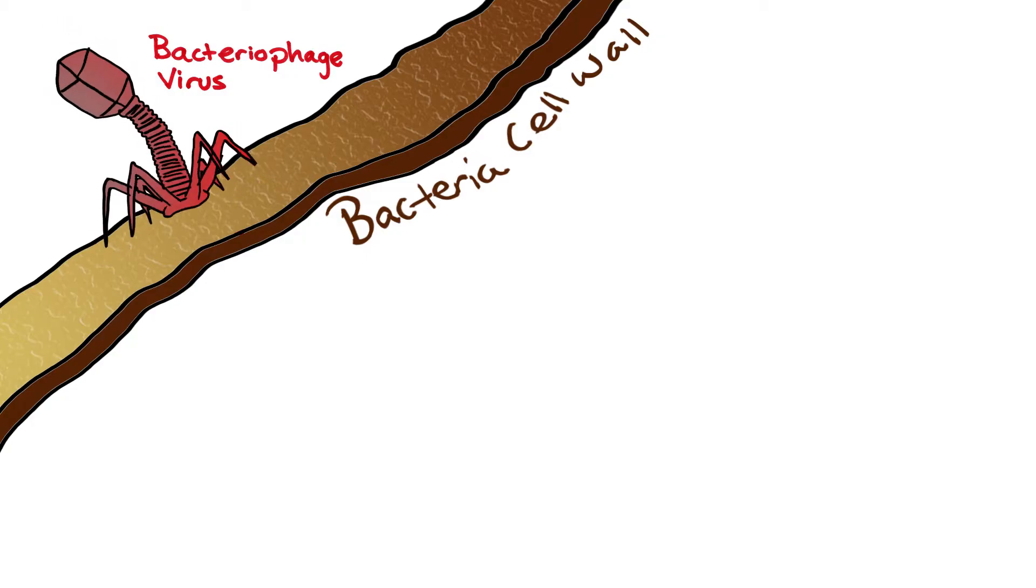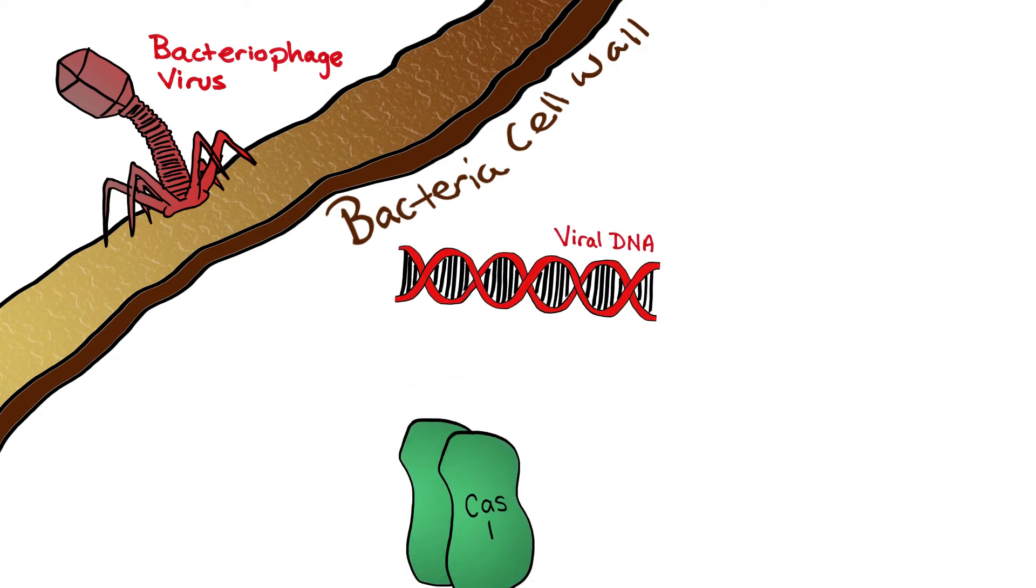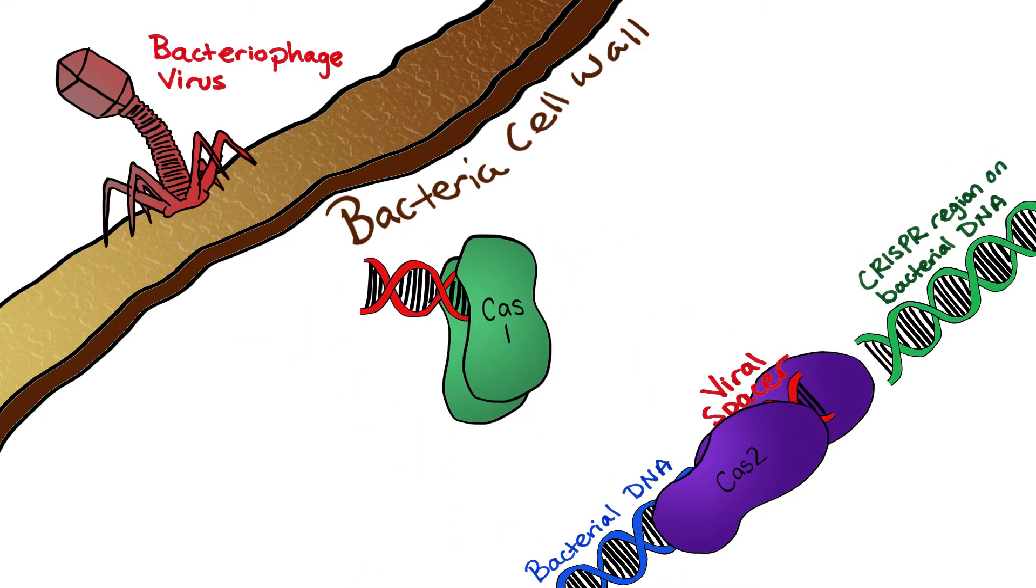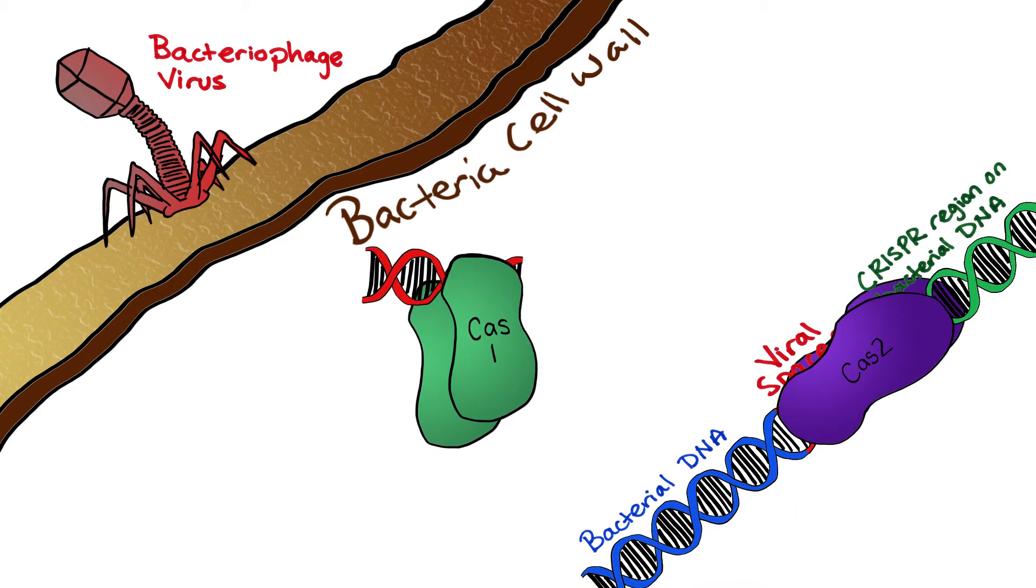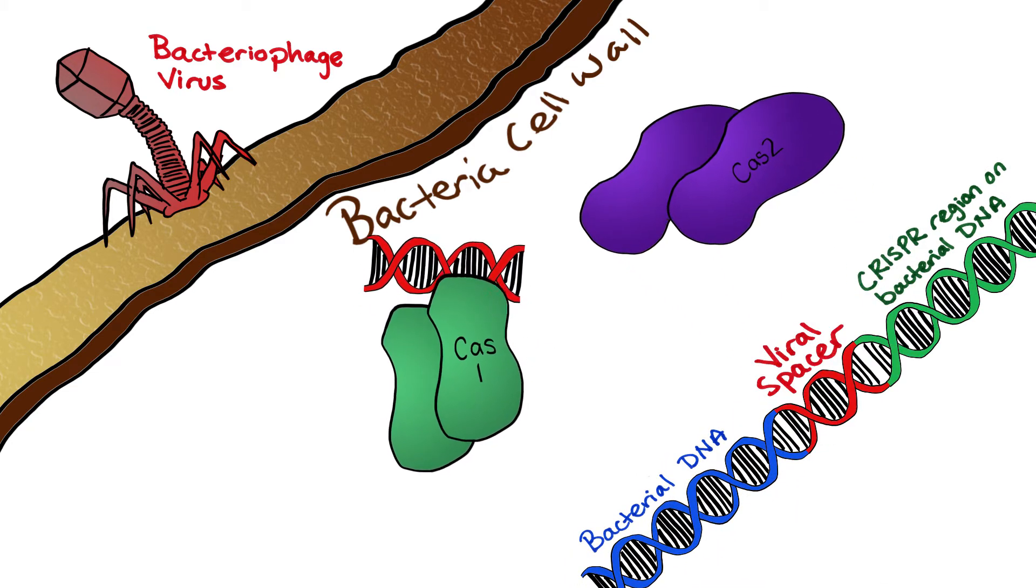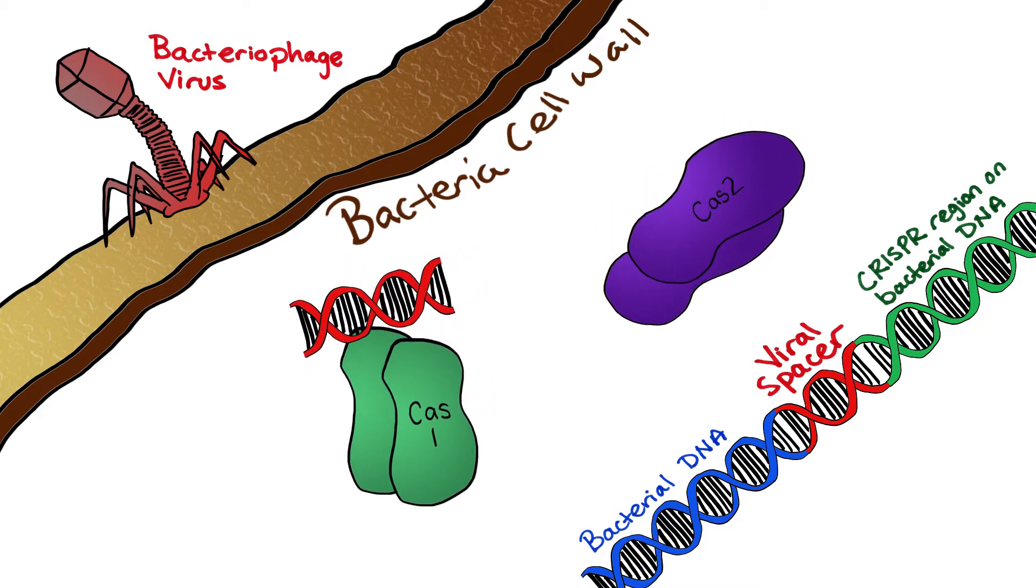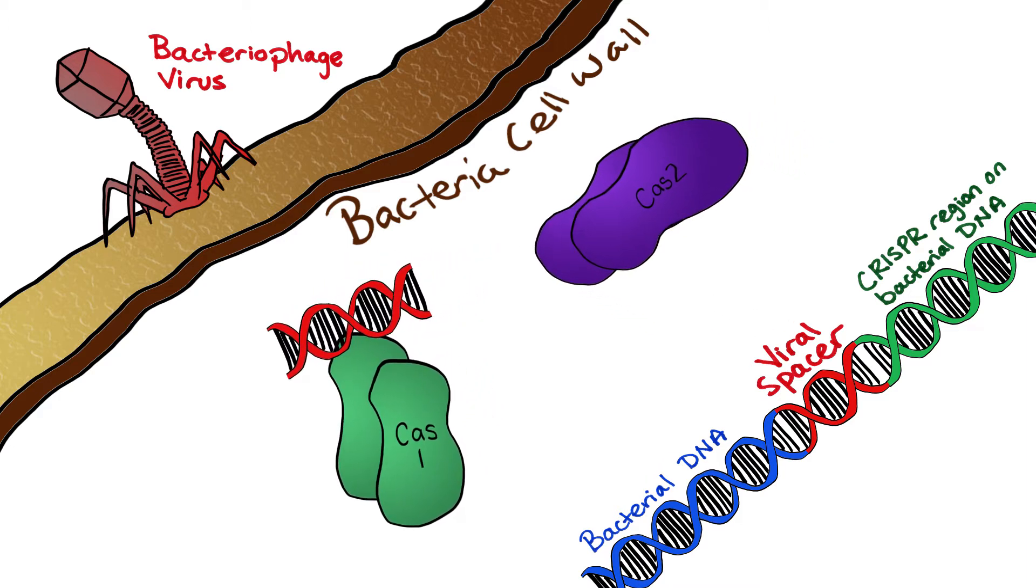We use the CRISPR adaptation system, and so this is a viral defense system that is natively in bacteria, and it acquires usually sequences from viruses. We found that we could hijack the system and have it acquire sequences that we provided. We can use that to then generate these what we call molecular records or recordings into the genome of a living bacteria.